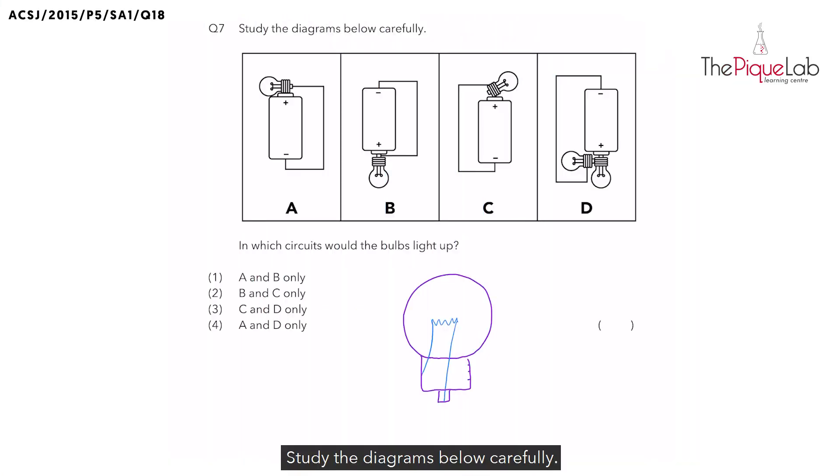Study the diagrams below carefully. In which circuits would the bulbs light up? When we see a question that uses drawings of bulbs and batteries instead of circuit symbols, we have to pay close attention to the drawings to check if the batteries and bulbs are connected properly.